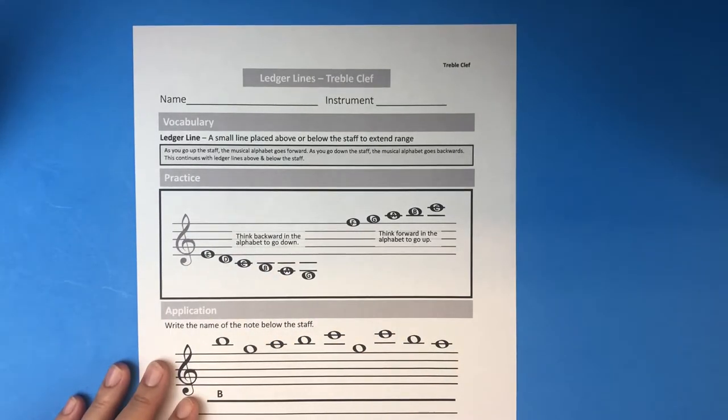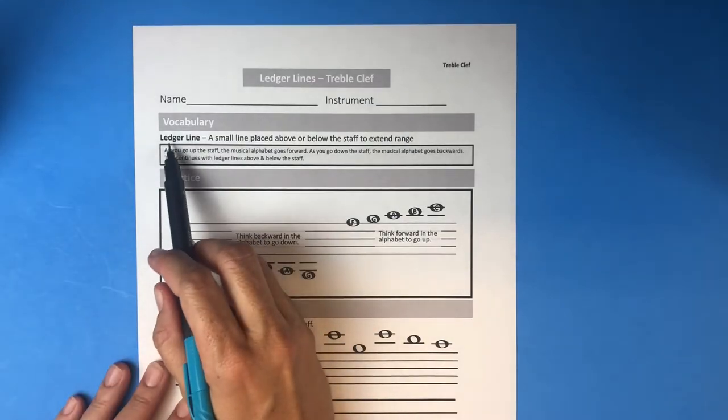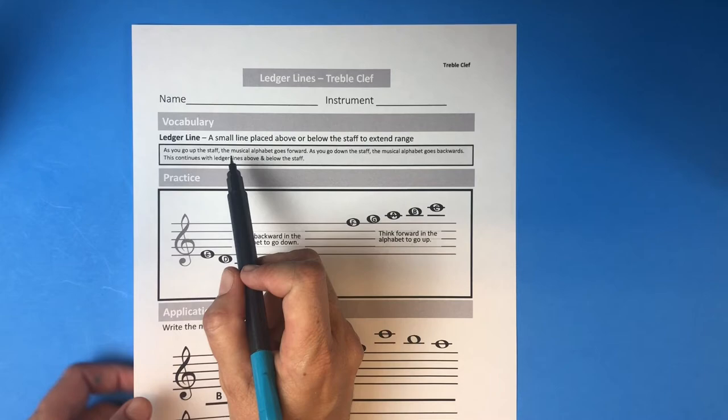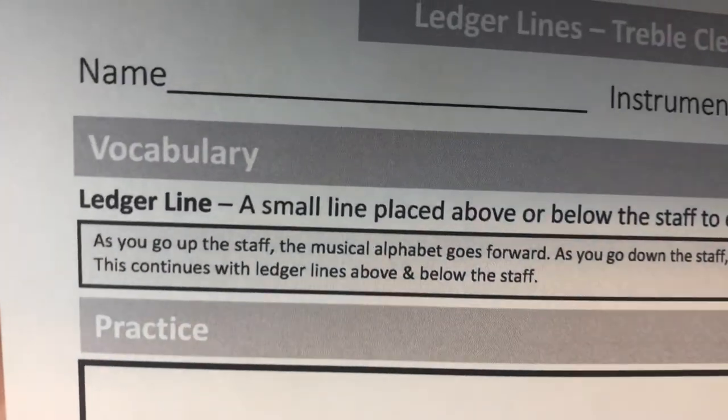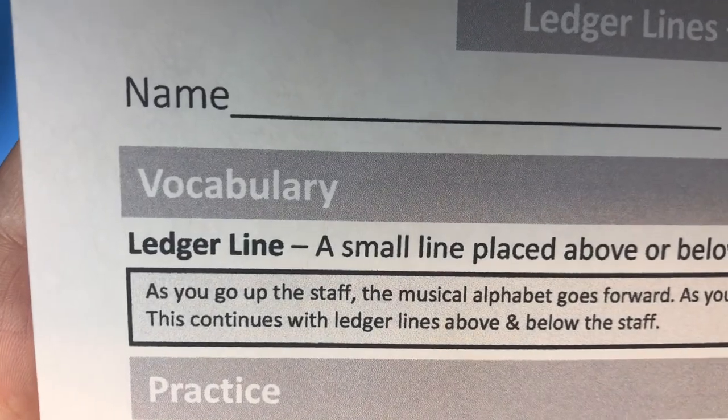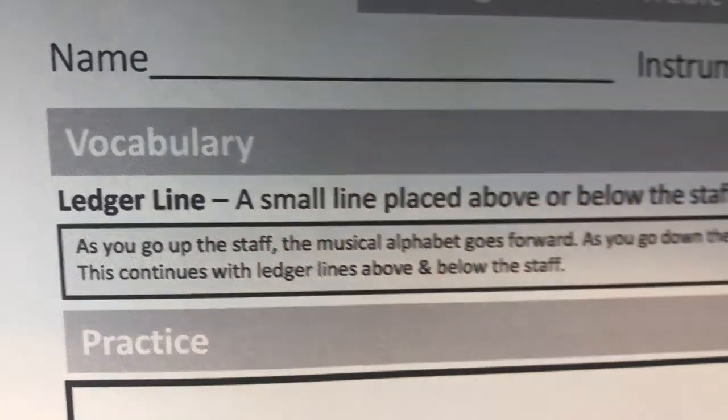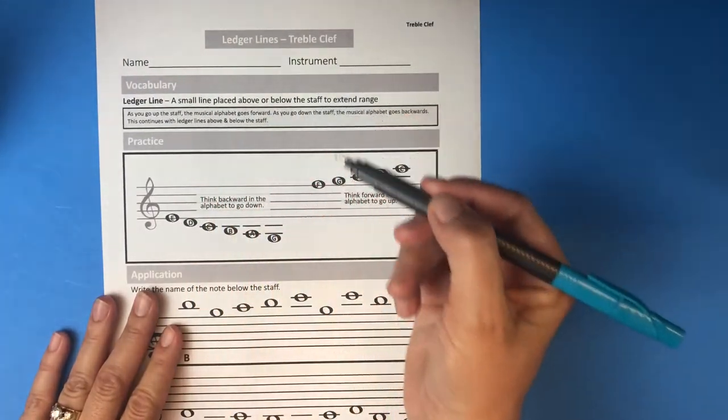You only have one vocabulary term for this page: ledger line. Notice it's spelled L-E-D-G-E-R. Ledger line is a small line placed above or below the staff to extend range. I'm showing you very close up so you can spell it correctly. This word gets misspelled often. Ledger line - again, it's a small line placed above or below the staff to extend the range.